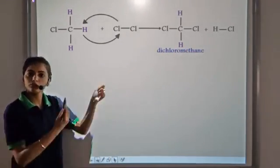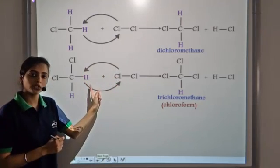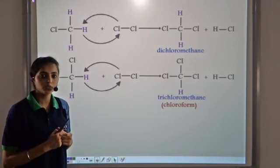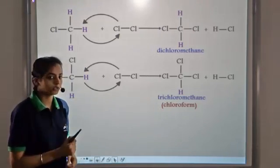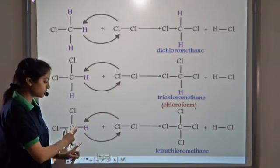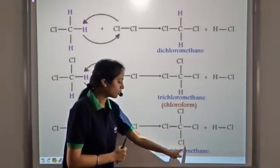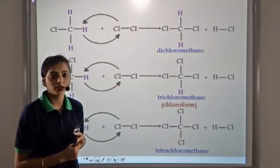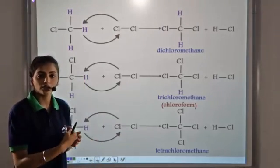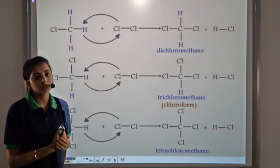Dichloromethane, which is also known as chloroform, still has two hydrogens, so again one hydrogen atom is replaced by a chlorine atom to give trichloromethane (also known as chloroform) plus HCl. This trichloromethane reacts further with chlorine — the last remaining hydrogen is replaced — forming tetrachloromethane and HCl. Now all four positions are taken by chlorine atoms. There is no more hydrogen atom to be replaced, so the substitution reaction stops. The substitution reaction continues as long as there is a hydrogen atom to be replaced.